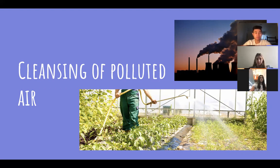Air phytoremediation, or AP, uses remediation techniques to cleanse and purify the air with green plants. The plants that are used have abilities to filter out, degrade, and modify these pollutants to make the air more healthy and fresh. AP has many advantages: it does not cause secondary pollution, it is cheap and easy to implement, it uses photosynthesis to function and fixes carbon dioxide in the process, and it is a natural way to clean the environment.